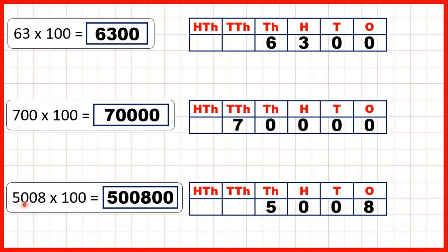And then we started with 5008. Multiplying by 100 is like multiplying by 10 and then by 10 again, so that's why the digits move two squares to the left. We write zeros in our empty place value columns to give us our answer 500,800.